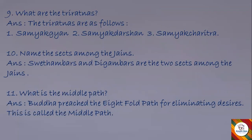Next question: What are the three Ratnas? The three Ratnas are Samyak Gyan, Samyak Darshan, and Samyak Charitra. Next question 10: Name the sects among Jains. Shvetambaras and Digambaras are the two sects among the Jains.